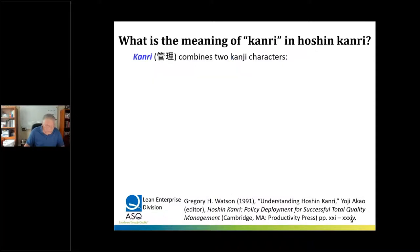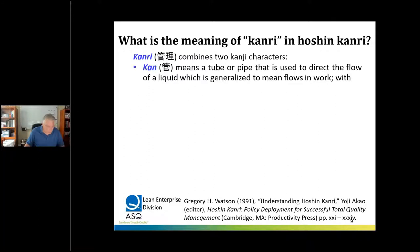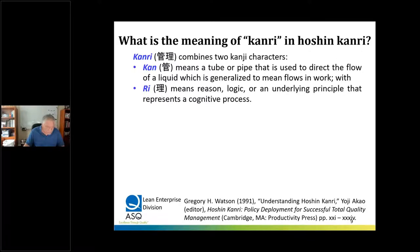So when we put hoshin together, we're thinking about a system that's a fully anticipating strategy, able to interpret direction even when it can't see very far. Kanri is a second term, combining two kanji characters. Kan means a tube or pipe used to direct the flow of a liquid — a generalized meaning of flow in work. That's combined with ri, which means logic, reason, or an underlying principle representing a cognitive process. The root of ri actually means to polish jade — a thinking process requiring understanding of three-dimensional structure.